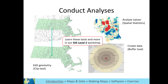Other tools can create new data, such as the buffer tool on the bottom right. In this example, an island has multiple rings around it that signify the various distances from its center. Another type of tool can act on data values, such as the spatial statistics tools shown in the top right. Here the tool shows where the values have hot and cold spots and how statistically significant they are. To learn more about what tools are available, see the materials from our GIS level 2 workshop available on our website.